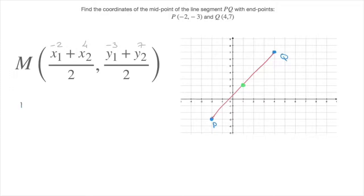In other words, the coordinates of the midpoint M would be negative 2 plus 4 over 2, and negative 3 plus 7 over 2. That leads us to M has coordinates negative 2 plus 4, which is 2 over 2, and negative 3 plus 7, which is 4 over 2. Finally, simplifying these fractions, we can state that the midpoint M has coordinates 1 and 2. And we're done.